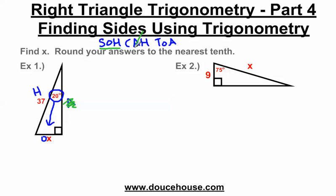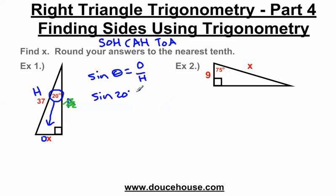I can't use anything with an adjacent side, so cosine and tangent are useless to me right now. So let's write down the trigonometric function using sine: sine of the angle is the opposite side over the hypotenuse. I'm going to plug in what I know. The angle is 20 degrees, the opposite side is x, and the hypotenuse is 37. My goal is to find x. I'll show a way using proportions — dividing by 1 — and then cross multiply to solve for x.